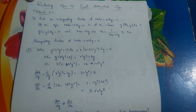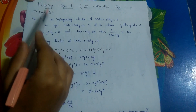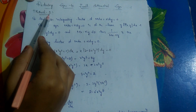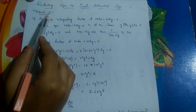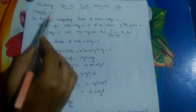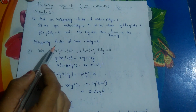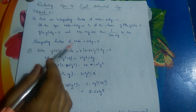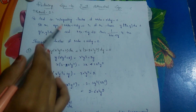Here we go with another topic: reducing equations to exact differential equations, Method 2. In Method 1, the question is in the form of a homogeneous differential equation, but in Method 2, the question will be in the form of a non-homogeneous exact differential equation — meaning it will not be in the form of a homogeneous equation.